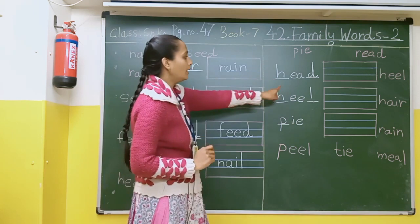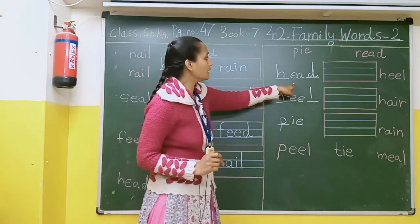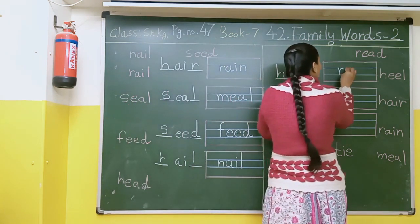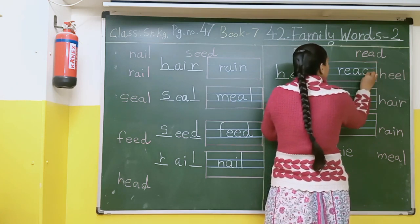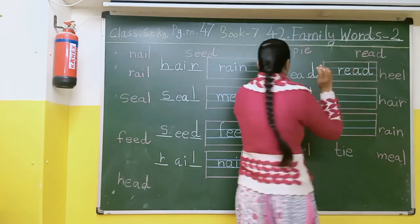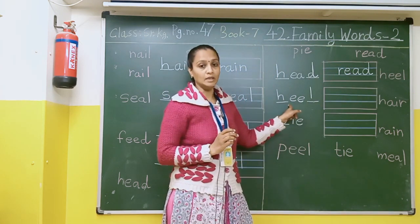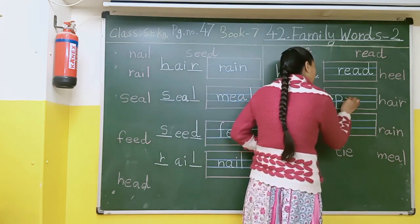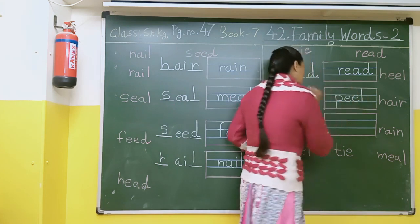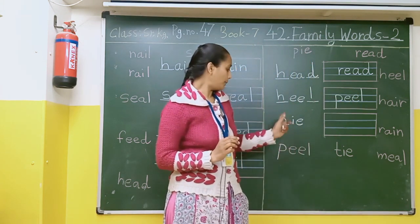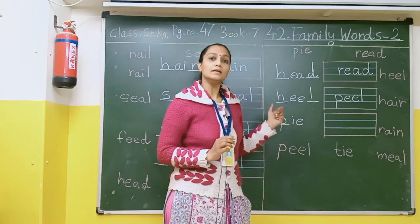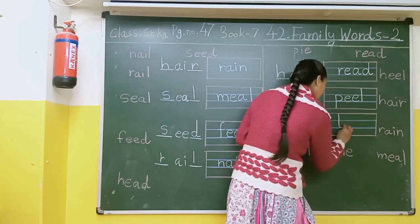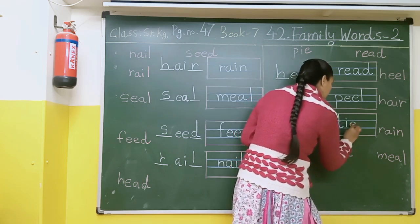Okay, here is head — we can read R-E-A-D, read. After that, here there is a word hill — hill, we can read peel. Peer, peel. Okay, here is a pie — pie, we can read tie. So here we will write P-I-E, tie.